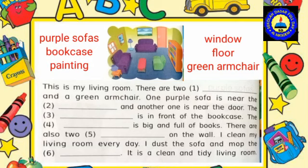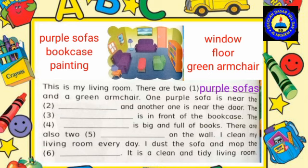Let's go to page 56, fill the blanks. This is my living room. Ini adalah ruang tamu saya. There are two purple sofas and a green armchair. Ada dua sofa ungu dan sebuah kursi berlengan hijau. One purple sofa is near the [blank]. Satu sofa ungu di dekat titik-titik. And another one is near the door. Dan yang lainnya dekat pintu.